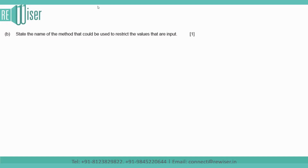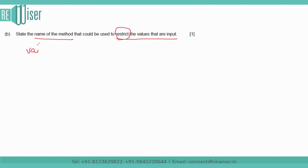Part B of the question: state the name of the method that could be used to restrict the values that are input. When you want to make sure that only certain kinds of values are input, you put some kind of restriction or condition on those values. The name of that method is simply validation. Validation is the answer — the process of making sure that you enter only certain kinds of values is called a validation check.